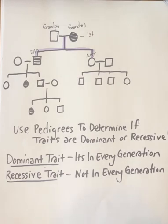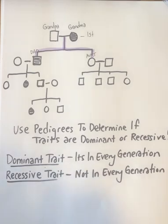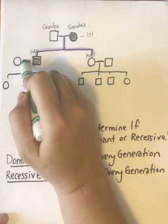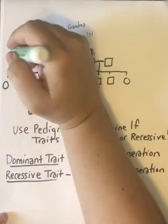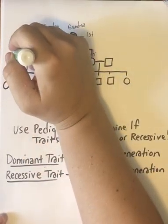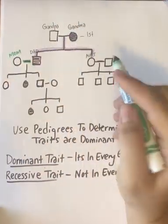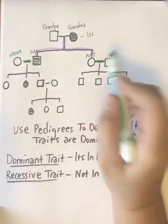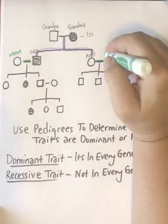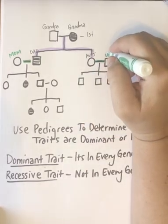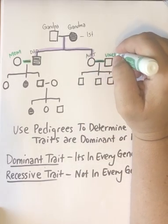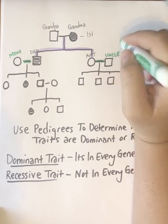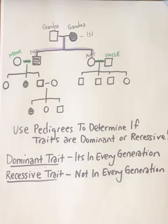Over to the side, they have their own mate. So my mom and my dad mated — this represents a mate. My aunt is going to mate with another guy, that would be my uncle, and they have their own children.